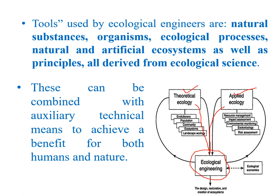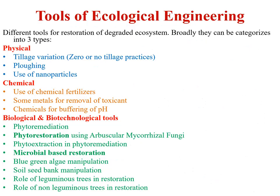These can be combined with auxiliary technical means to achieve benefits for both humans and nature. We can broadly categorize the tools for ecological engineering into three categories: physical tools, chemical tools, and biological and biotechnological tools. Physical tools include manipulation of physical site conditions — like tillage variation in a severely degraded ecosystem. We can follow no-tillage, moderate tillage, or geo-tillage practices instead of conventional deep tillage, and we can also use nanoparticles for restoration of degraded sites.